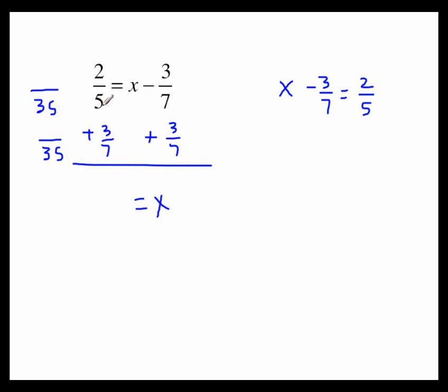What this needs to be multiplied by to create a 35 is 7. So multiply on the top by 7, and we get 14. What this needs to be multiplied to create 35 is 5. Multiply on the top by 5, which makes 15. We are adding, and we get 29 over 35.